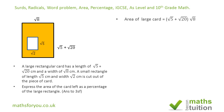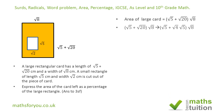The area of the large rectangle is its length, which is (√5 + √20), times its width. I'm doing this step by step. Next I want to simplify √20: we know √20 = √4 × √5, because 4 × 5 = 20.